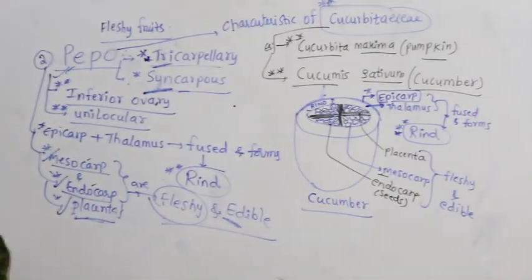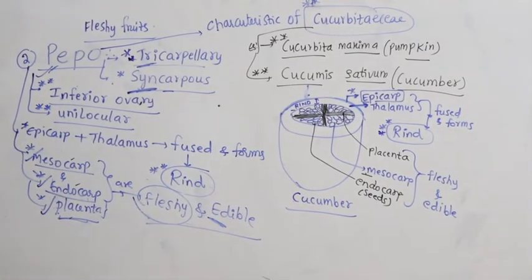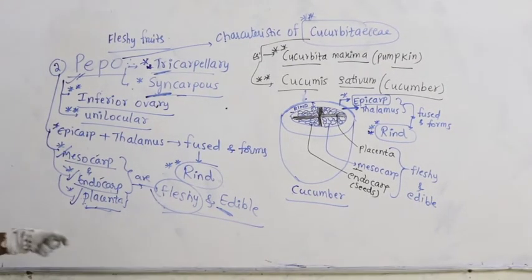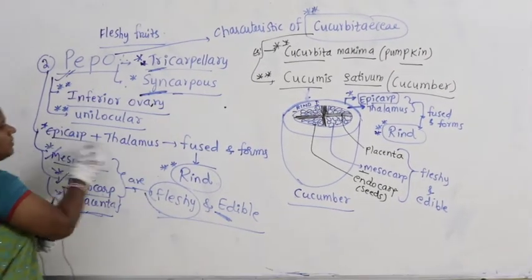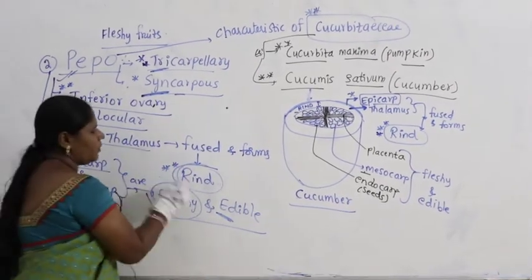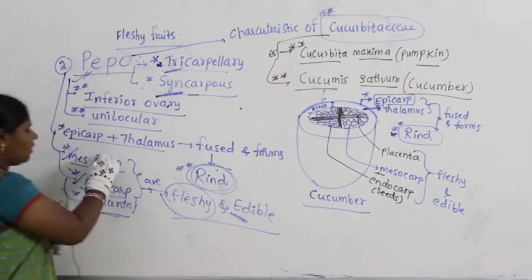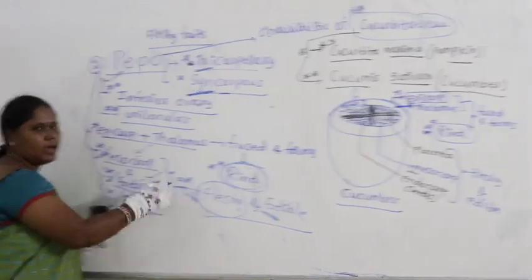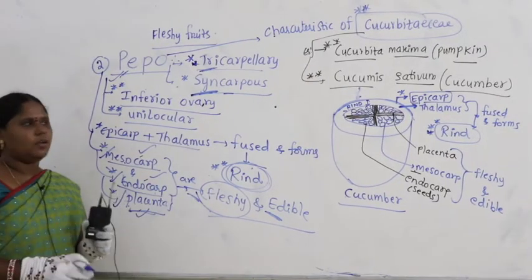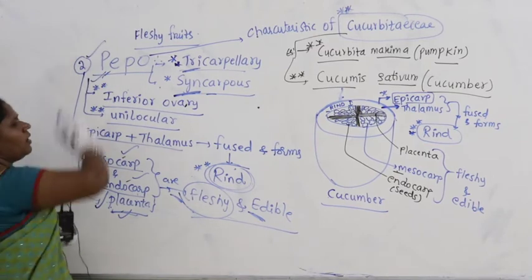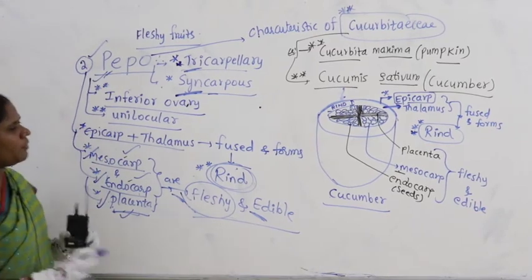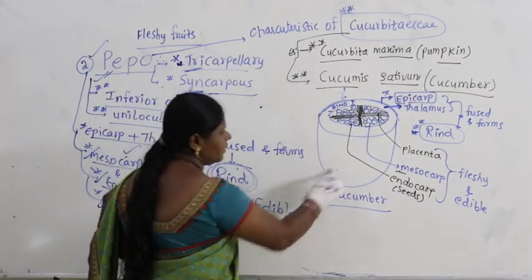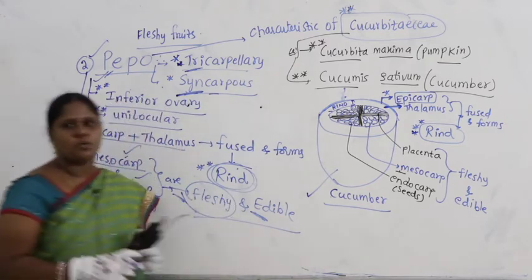So epicarp and thalamus are fused to form the rind. Mesocarp, endocarp, and placenta are edible. This is pepo. The best example is Cucumis sativus — cucumber.